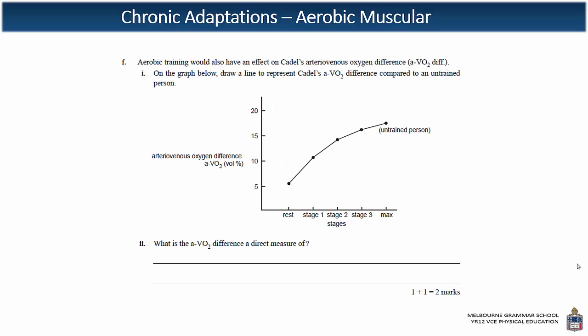Going further, there's a graph question: 'Aerobic training would also have an effect on Cadell's AVO2 difference. On the graph below, draw a line to represent his AVO2 difference compared to an untrained person.' Would Cadell have a greater AVO2 difference? Remember, he'd have greater capillarisation and greater myoglobin, so that line would need to be drawn above the untrained person. AVO2 difference is a direct measure of oxygen consumption via the muscles, or you could say it's a measure of the oxygen concentration in the arteries and the veins — both options were allowed.